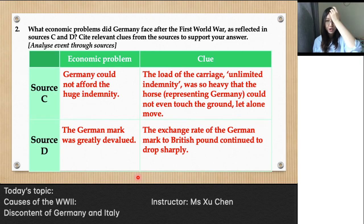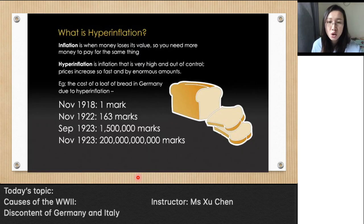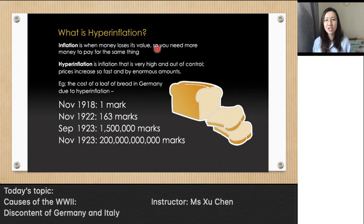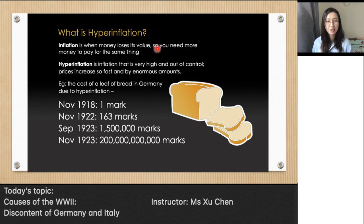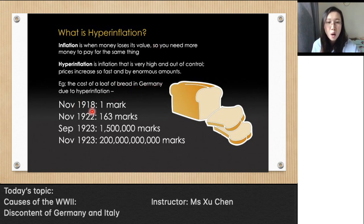I'll now explain an important economic term: hyperinflation. We already know what inflation is — it's when money loses its value and you need to pay more for the same thing. Hyperinflation is an extreme degree of inflation. For example, before the First World War you could buy a loaf of bread with one mark, but by 1923 you had to use 200 billion marks to buy just one loaf of bread.